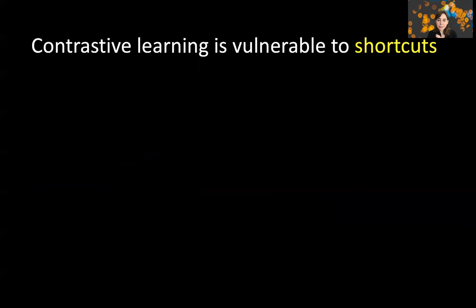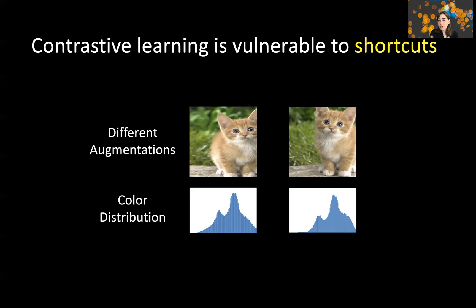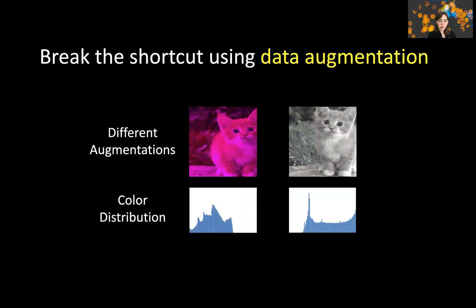Unfortunately, contrastive learning is vulnerable to shortcuts. There can be shortcuts — information that is irrelevant to the task. One of the very early known shortcuts is color distribution. Contrastive learning can learn the color distribution of the image instead of the semantic information that the image has a cat, and use that color distribution without needing to learn the semantic information. This dramatically degrades performance. People traditionally address this with data augmentation — creating augmentations that break the shortcuts, such as color jitter or grayscale. And indeed, it addresses the problem.